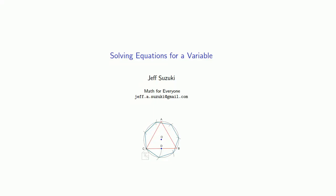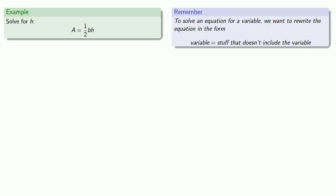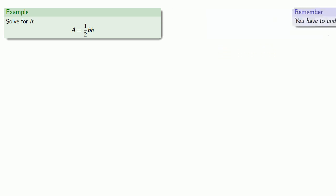One of the important things we have to be able to do is to solve an equation for a specific variable. Suppose we have the equation A equals one-half BH, and we want to solve this for H. There are three important things to keep in mind when solving equations. First, to solve an equation for a variable, we want to rewrite the equation in the form: variable equals stuff that doesn't include the variable. Second, the type of expression or equation is determined by the last operation performed. And third, you have to undo the last thing first.